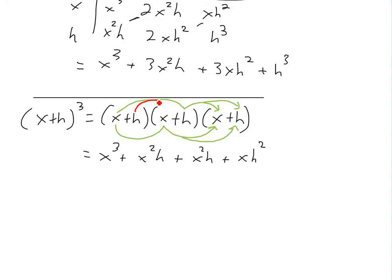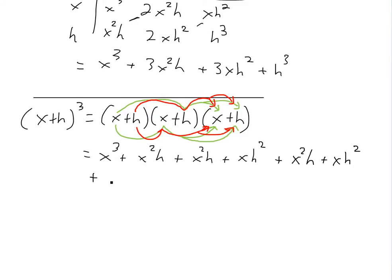Now we do the exact same thing for the h branch: h times x times x gives x squared h; plus h times h times x, which is x h squared; then the top part h times h times x, so h squared x — we put the x in front to keep it consistent; and finally h times h times h, which is just h cubed.